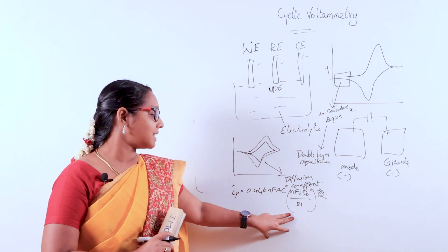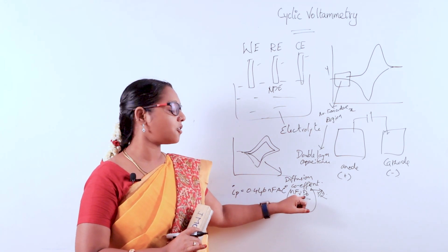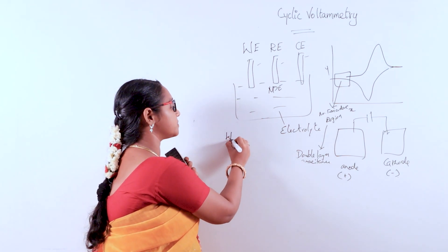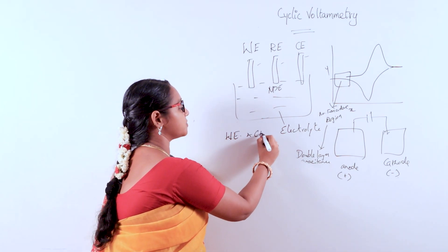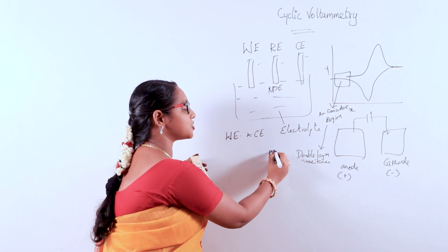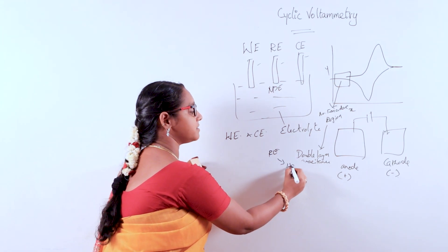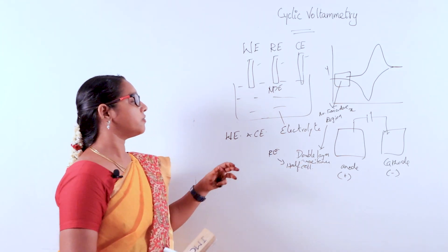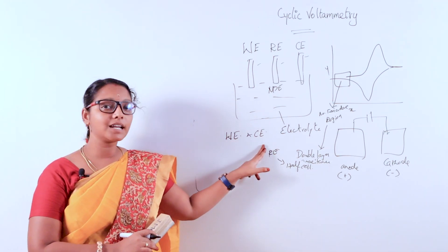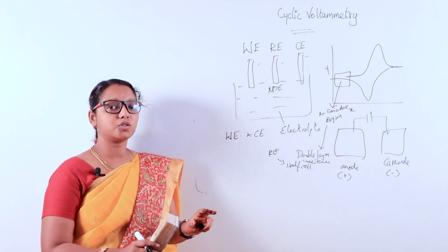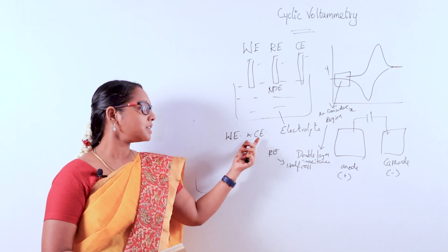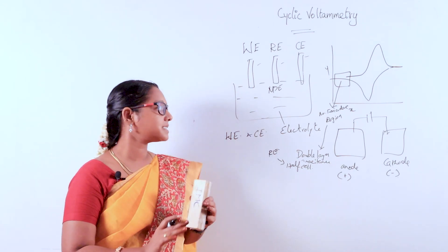From that equation we can calculate the peak current and diffusion coefficient of the analyte. There are three electrodes. The reference electrode is kept separate — this is called an off-cell configuration. When the working electrode acts as the anode, the counter electrode acts as the cathode, and vice versa.